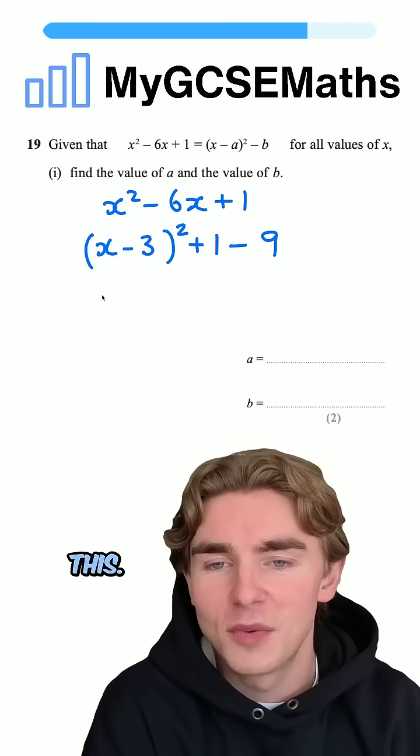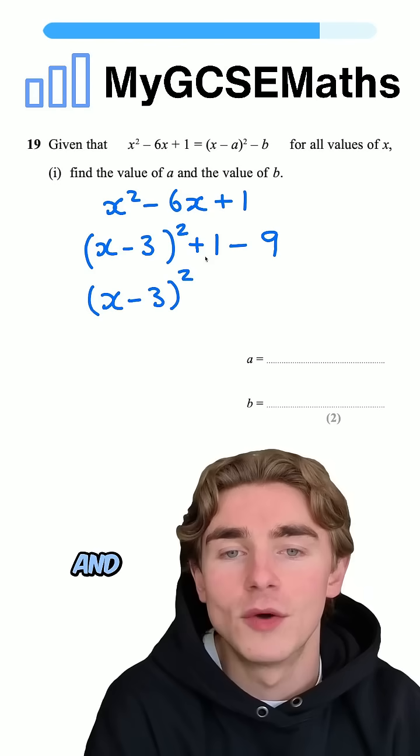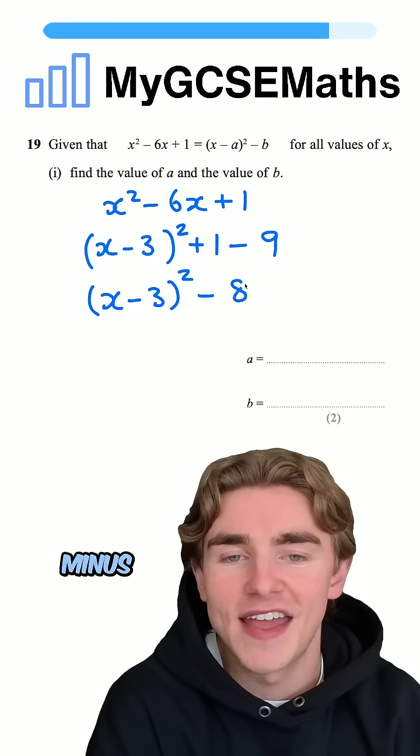The final step is going to be to simplify this. We're going to have x minus 3 squared, and then we can do plus 1 minus 9 is going to give minus 8.